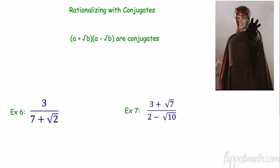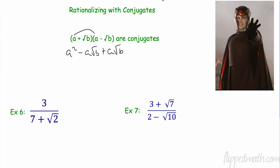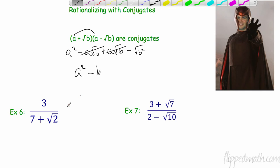Rationalizing with conjugates is new material. Conjugates are two expressions that when multiplied together produce a rational number with no radicals. This works like a difference of squares: (a + √b)(a − √b) = a squared minus b. The middle terms cancel, and since we're squaring the square root, the radical disappears.